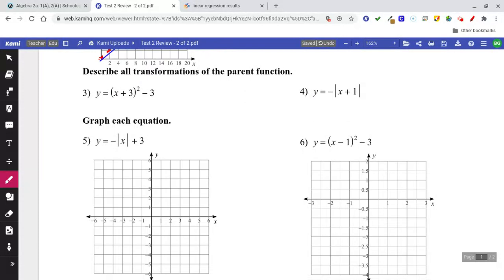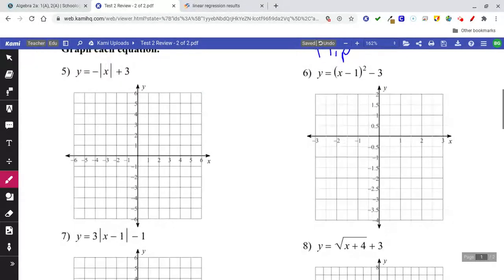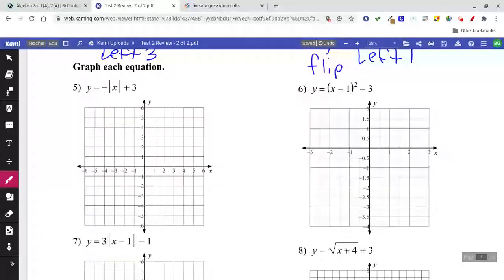Describe the transformations. That's talking about shifting and flipping. This is going to be left 3 and down 3. And you have to take it one step further. We know this is an absolute value, the bars mean it's a V shape, but we've got a flip. And this says up 3.